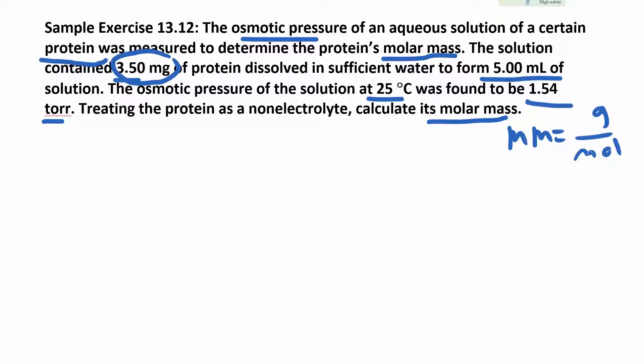Molar mass is grams per mole. They gave us milligrams, which we can convert to grams, so we need to find moles. We know π = (n/v)RT. If we had an electrolyte we'd add i, but this is a non-electrolyte so the van't Hoff factor is one. n is the moles—that's what we're looking for. We must already know everything else.